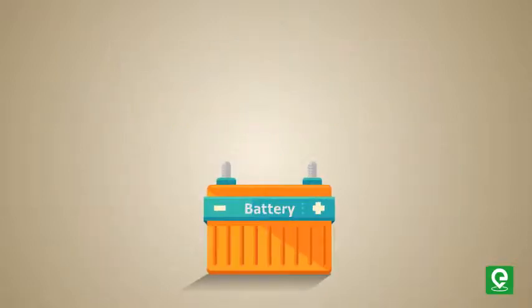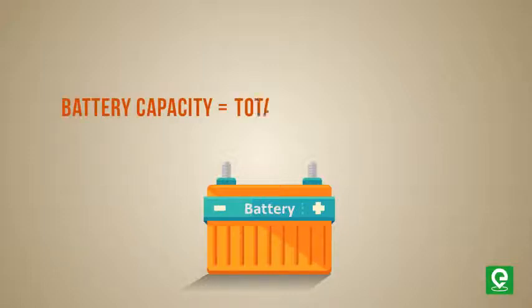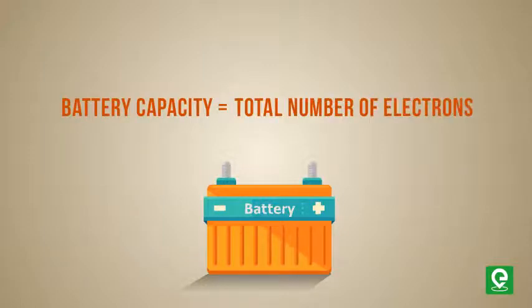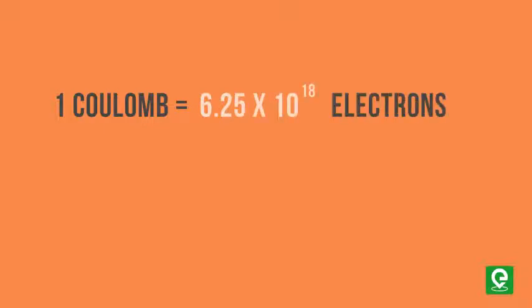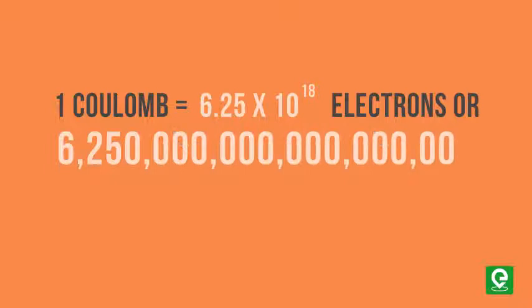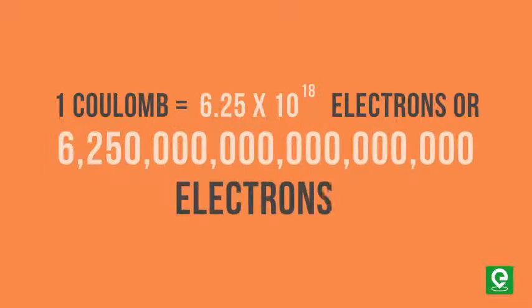Therefore, we can measure the capacity of a battery in terms of the total number of electrons. We can use the unit of charge — the coulomb — which is equal to 6.25 × 10¹⁸ electrons, but that will be a huge number and difficult to manage.